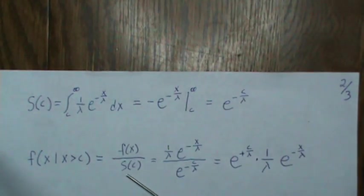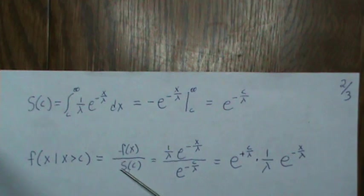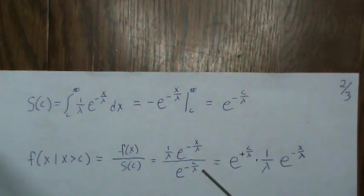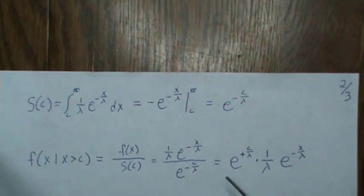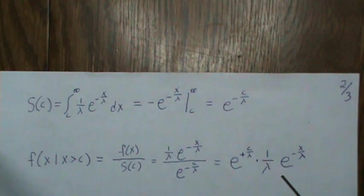Now our density becomes f of X divided by this, which is one minus F of C which can just be S of C which is this, and we take the numerator, the denominator to the numerator then it becomes a plus, and then here's our density.